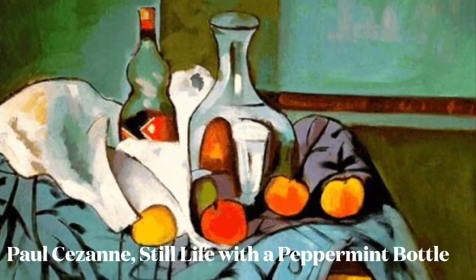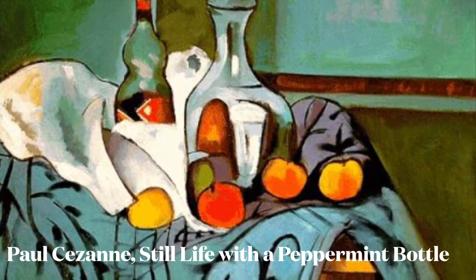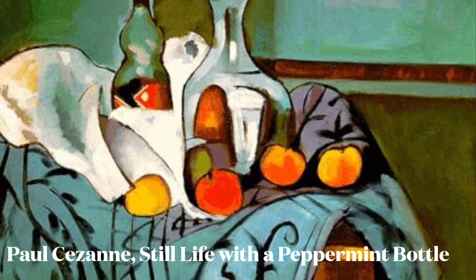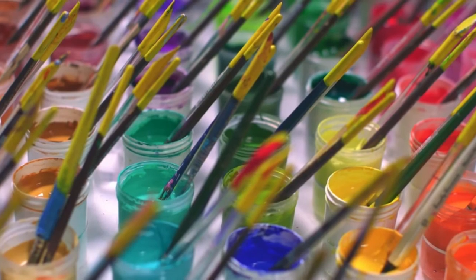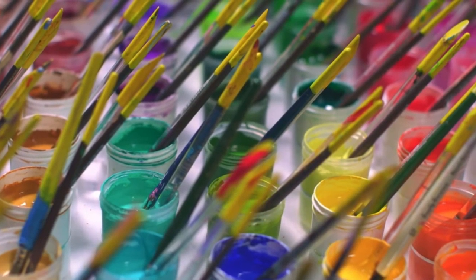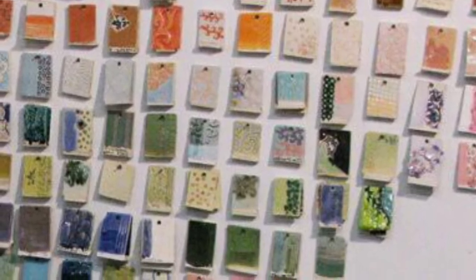When an artist focuses on the interesting objects in a room this is called a still life. This one has a very beautiful peppermint bottle that the artist has featured right in the center. Artists are like scientists. They have to mix colors. They have to mix formulas for glaze and many more things.